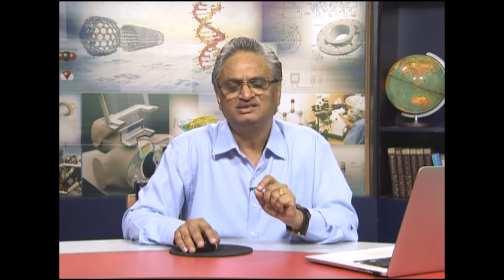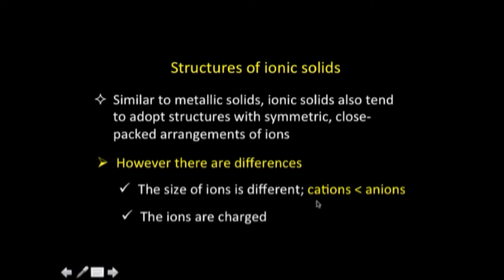Now let us move to the structure of ionic solids. Similar to metallic solids, ionic solids also tend to adopt structures with symmetric close-packed arrangements of ions. However, two things are different: first, the size of ions differs — cations are typically smaller than anions — whereas in metallic solids all atoms are identical. Second, the ions are charged species, unlike the electrically neutral atoms in metallic solids. These differences bring important consequences into play.